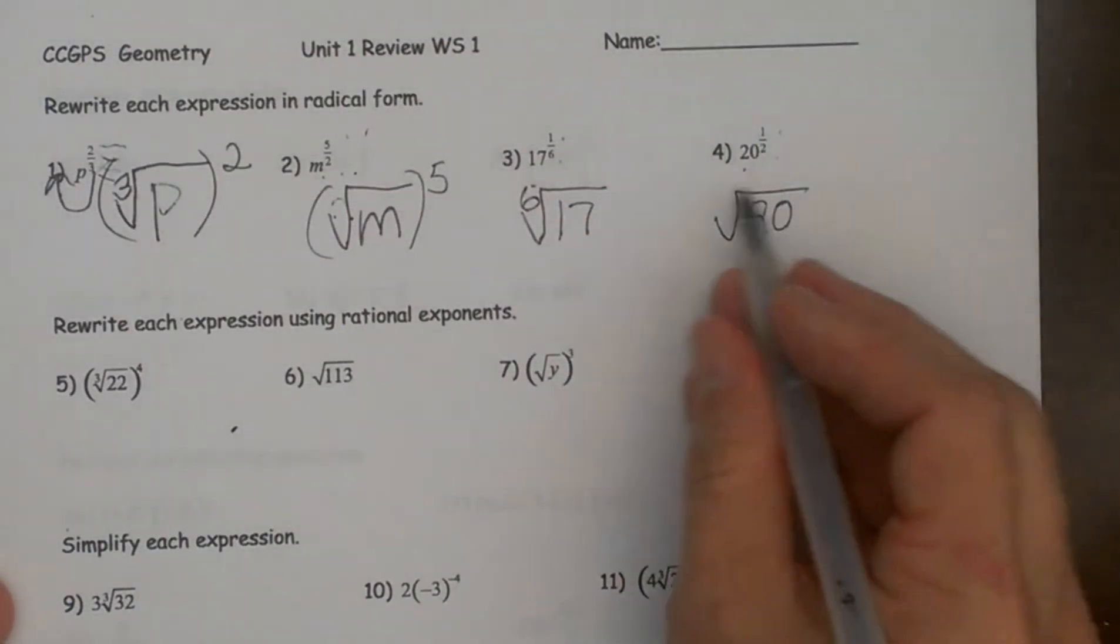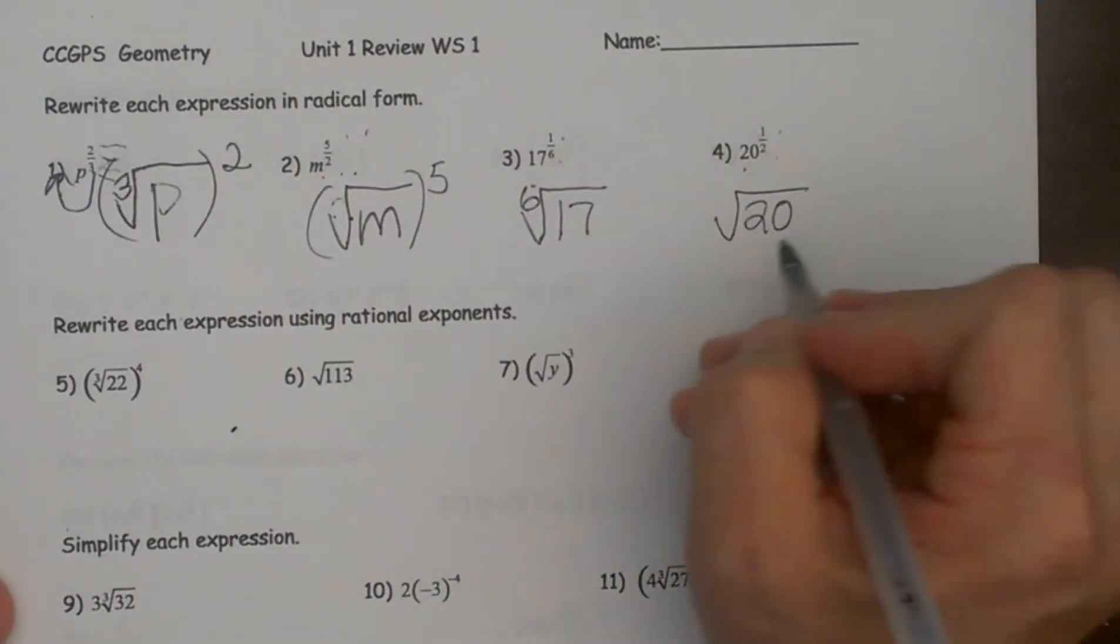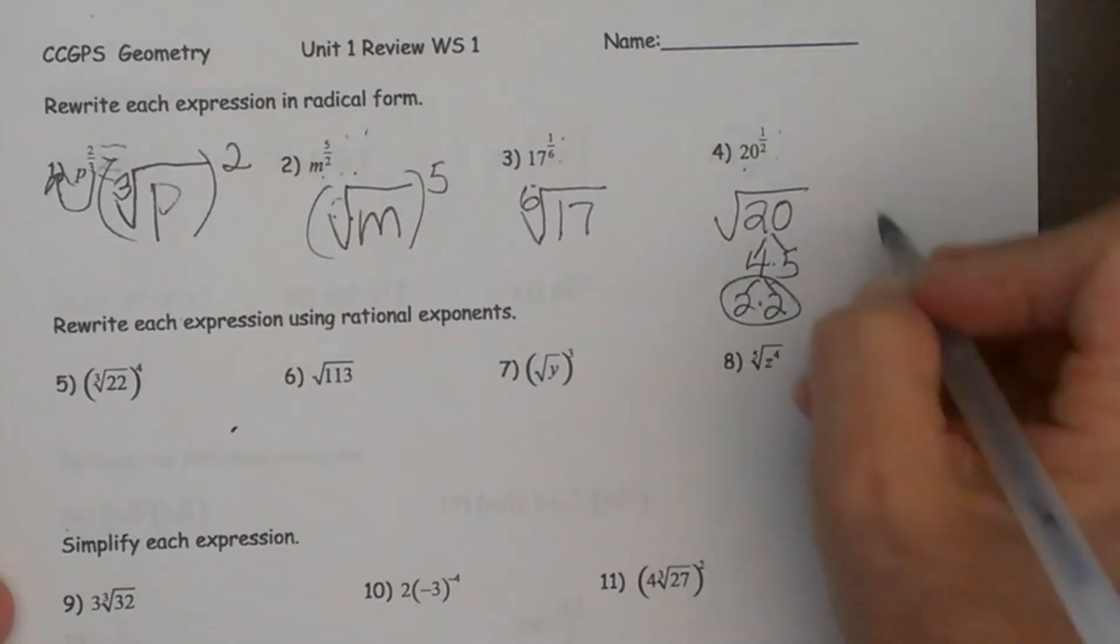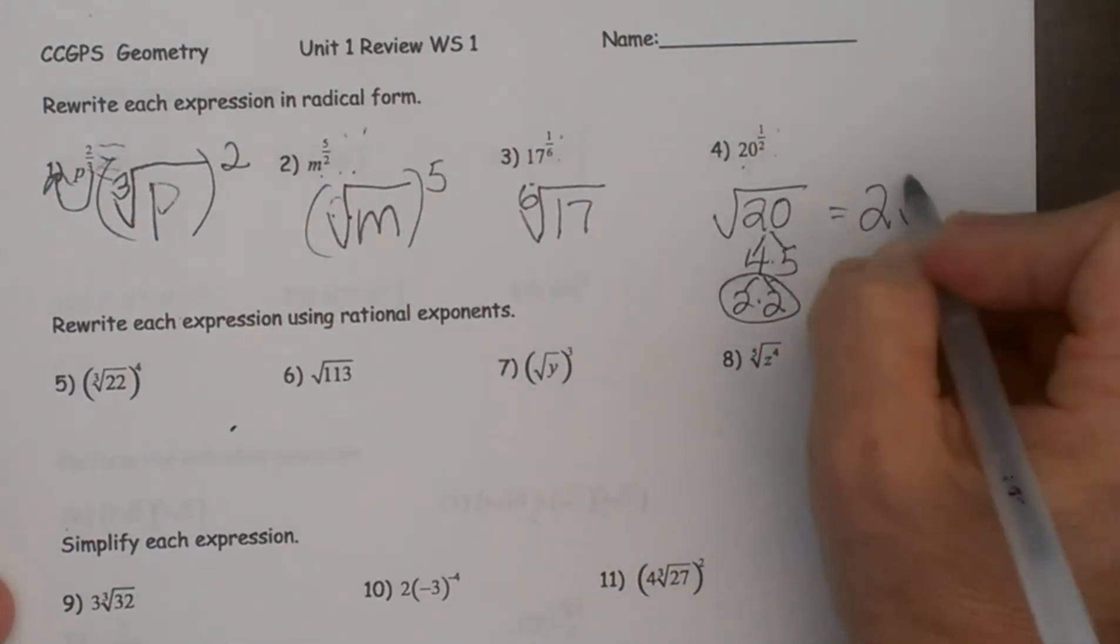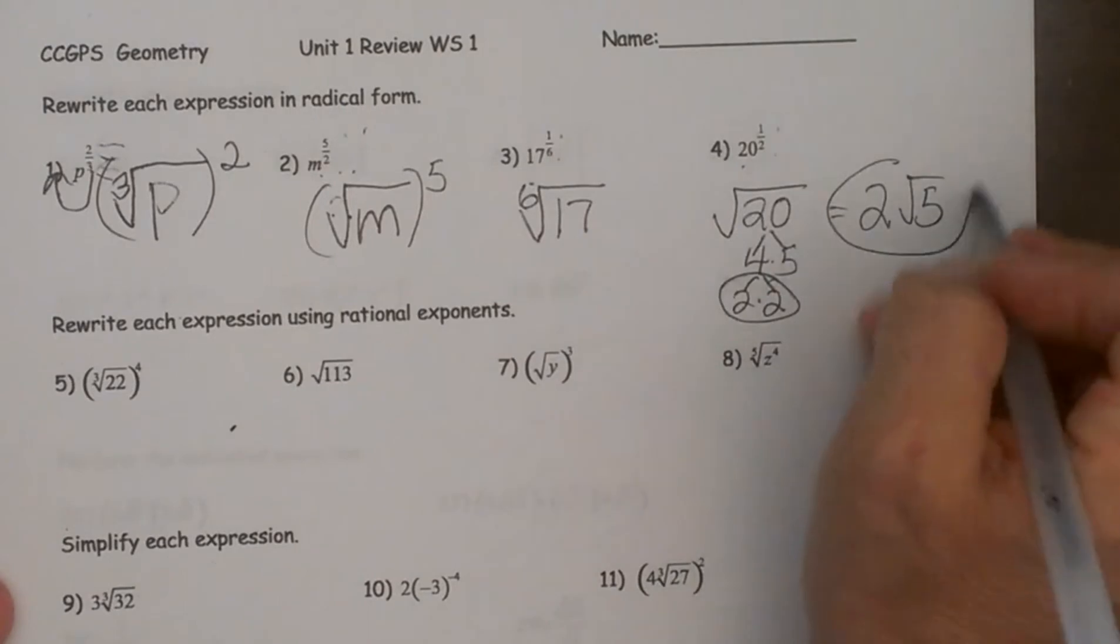Now that one actually simplifies. So let's go ahead and simplify it. That is four times five which is two times two. So we have a pair and that becomes two square roots of five. And that is your final answer.